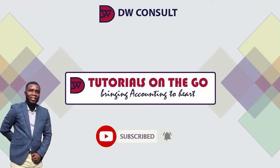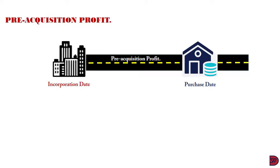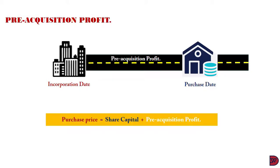Now to this episode's lecture: Pre-acquisition Profits. Very often, a parent company acquires a subsidiary company some years after incorporation, in which case the subsidiary company would have earned profits pre-acquisition. As a result, the purchase price paid by the parent company will be for the share capital plus any profits already earned. These profits earned before the date of acquisition are known as the pre-acquisition profits.